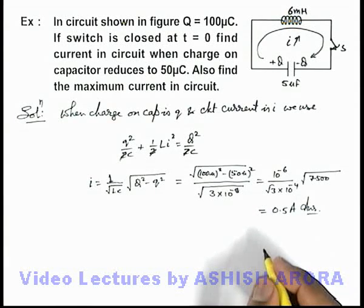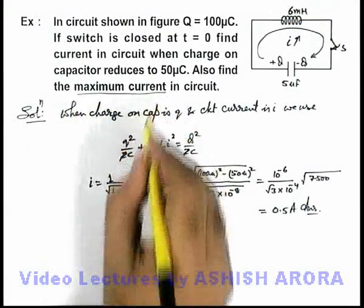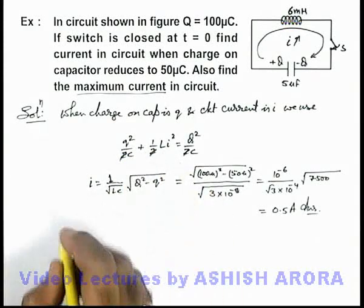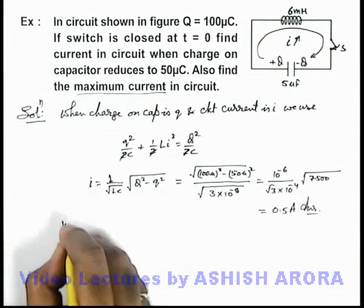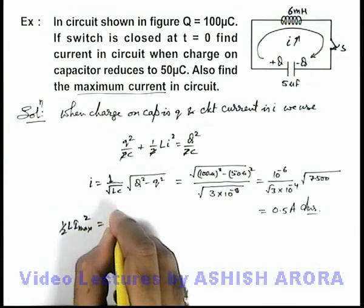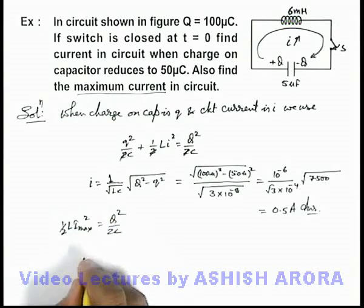Here we are also required to find the maximum current in the circuit, so current is maximum when the charge on capacitor becomes zero. So we can directly write ½Li_max² should be equal to Q²/2C.